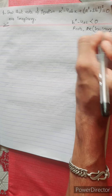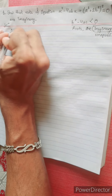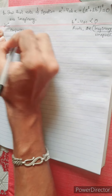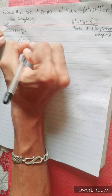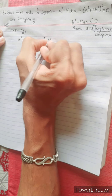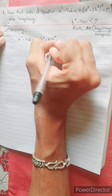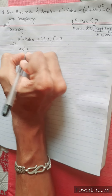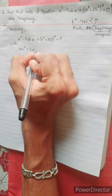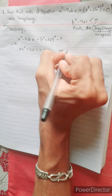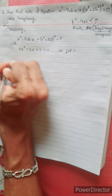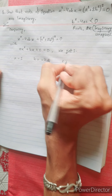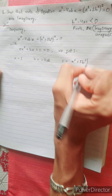We will prove this by comparing the given equation x squared minus 4abx plus (a squared plus 2b squared) equal to 0 with the standard equation x squared plus bx plus c equal to 0. We get: A = 1, B = minus 4ab, C = a squared plus 2b squared.